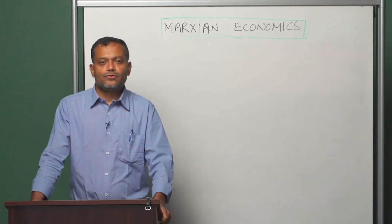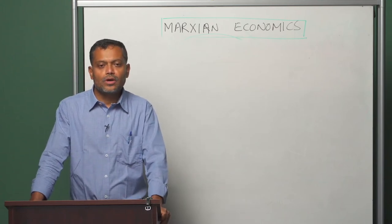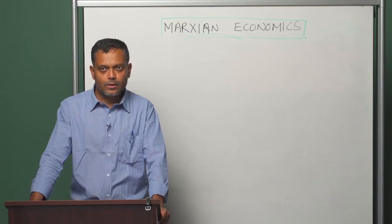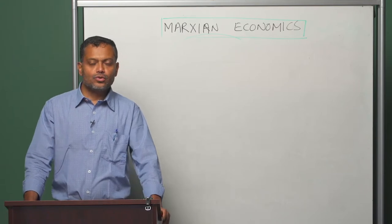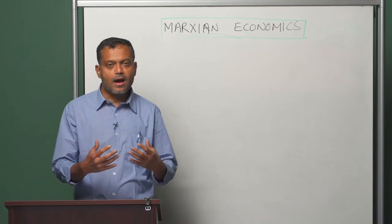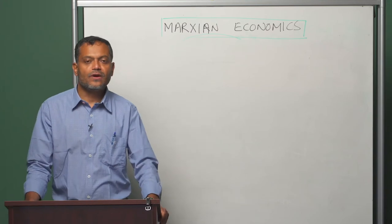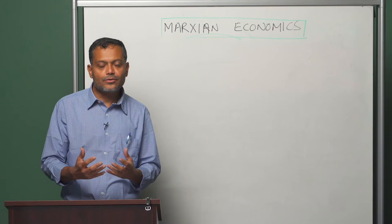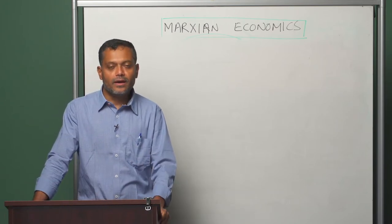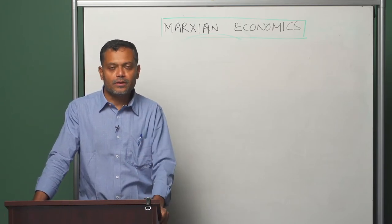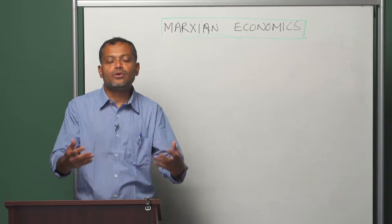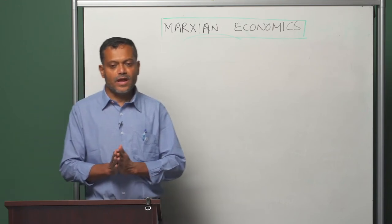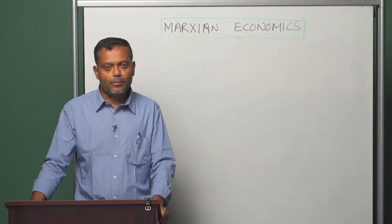In the previous segments of this module, we have gone through the argument as laid out by Marx in the first 25 chapters of Capital. We have understood two important aspects: one, how capital generates surplus value through the exploitation of workers, and second, how surplus value generates capital through the reinvestment of surplus value in the production process. With that, we have a pretty good understanding of some of the key structural features of capitalism.